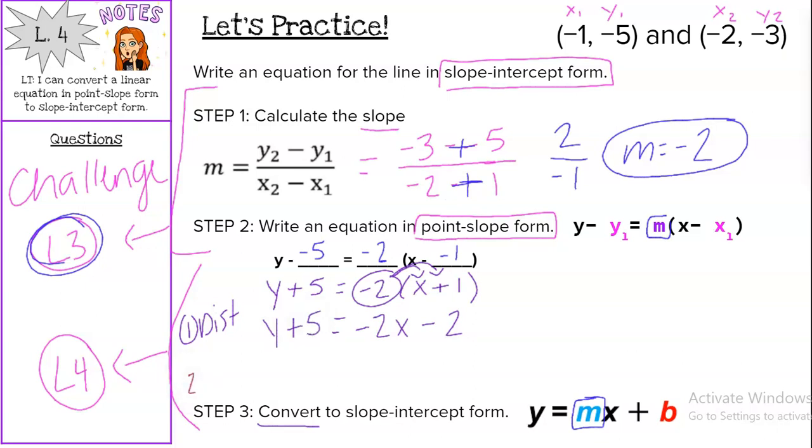And then that last piece, step 2, is making it y equals. So we want to get rid of that plus 5 with a minus 5 on both sides. 5 minus 5 is 0. So we get y equals negative 2x, just comes down. And then negative 2 minus 5 is negative 7.